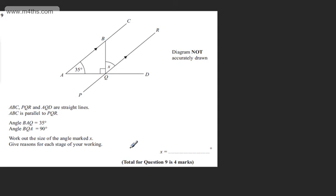This is question number 9 and it carries 4 marks. We're told ABC, PQR and AQD are straight lines. ABC is parallel to PQR. Angle BAQ is equal to 35 degrees. Angle BQA is equal to 90 degrees. We're asked to work out the size of the angle marked X and give reasons for each stage of our working.